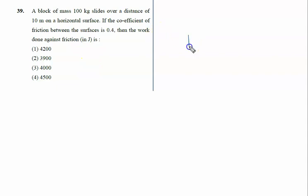A block of mass 100 kilograms slides over a distance of 10 meters on a horizontal surface. The mass is given as m equals 100 kg and the distance s equals 10 meters.